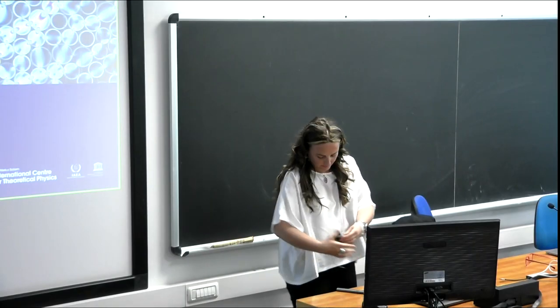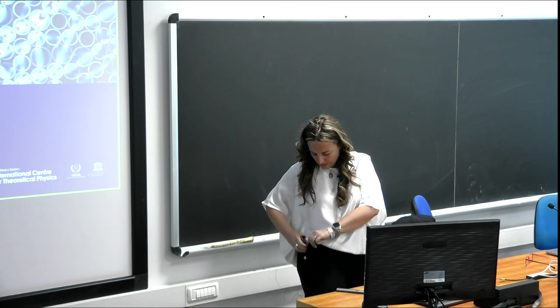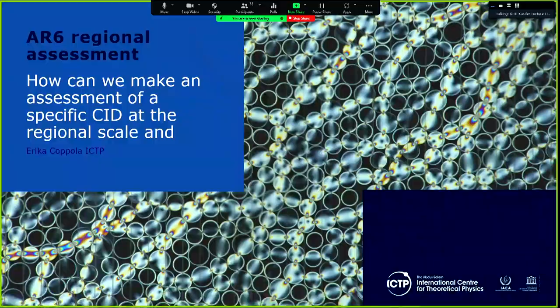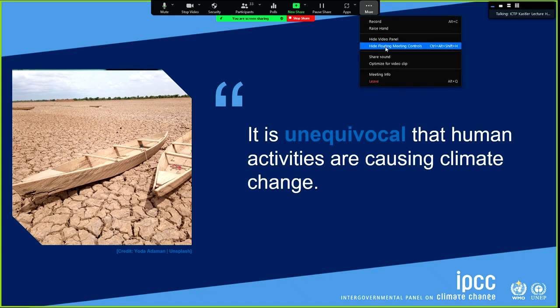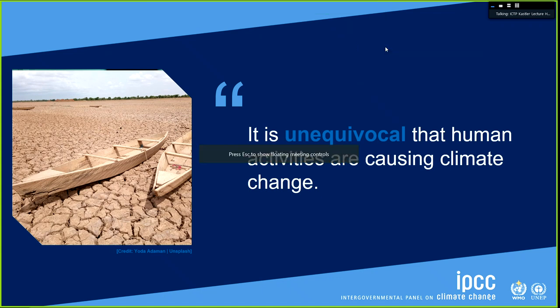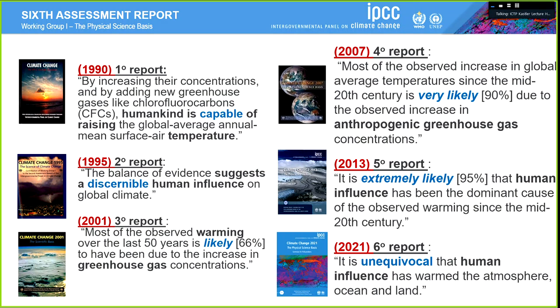Just to bring you to the methodology on how this was done, let's start with another thing that was unique for this latest assessment. For the first time we can use the word 'unequivocal' — it is unequivocal that human activities are causing climate change. We can do this now because we have more evidence, longer observational records, better models, and much more process understanding. So you start to see that these things come together and it makes us move from what it used to be in the past.